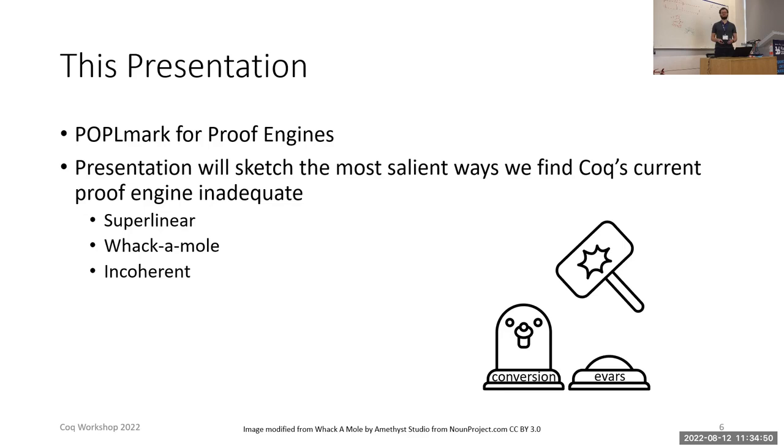This presentation will sketch the most salient ways that we find Coq's current proof engine inadequate, with three examples in roughly three categories. The superlinearity of performance bottlenecks in Coq, the whack-a-mole-like nature of debugging performance problems where the same bottlenecks in fundamental building blocks keep showing up again and again in slightly different ways across various tactics, and finally, the incoherent nature of the performance landscape in Coq, where you can't just know the asymptotics of the building blocks and then apply that framework to get the asymptotics you want.